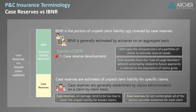The second source of IBNR is late reported claims. A claim is covered under an occurrence policy based on the date of loss, even if it is reported after the end of the policy period. This means that a reserve is necessary even if a claim has not yet been reported.